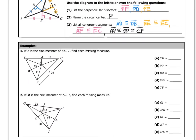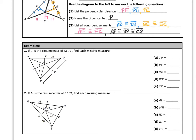Let's try some examples involving circumcenter. Example one says: if Z is the circumcenter of triangle TUV, find each missing measure. For part A, we need to find TU. Because Z is the circumcenter, segment XZ bisects segment TU, so since XU is 19, TX is also 19, and TU has to be 38. For part B, VY: we know VY is congruent to YU, and VU measures 34, so VY has to be half of that, which is 17.